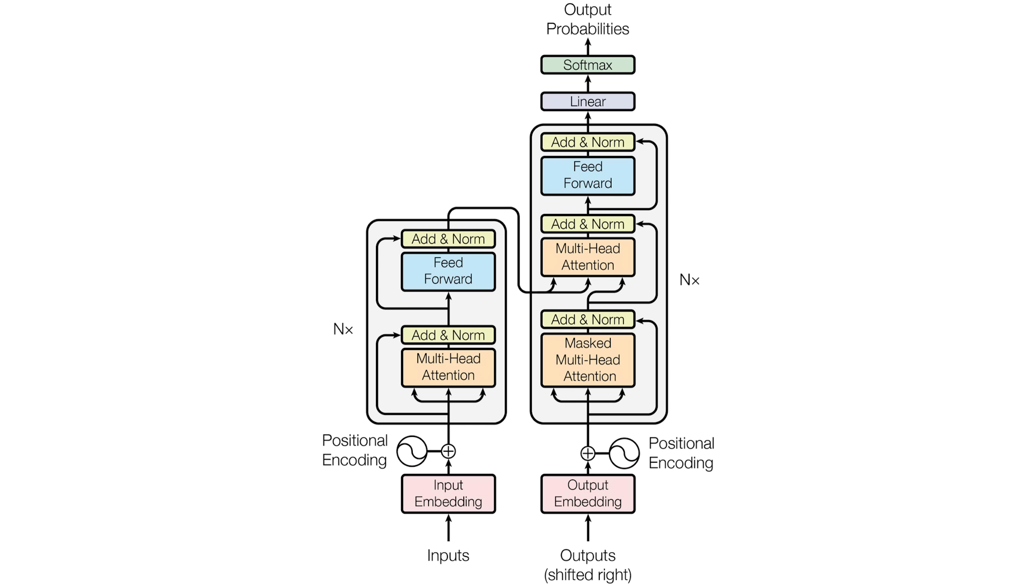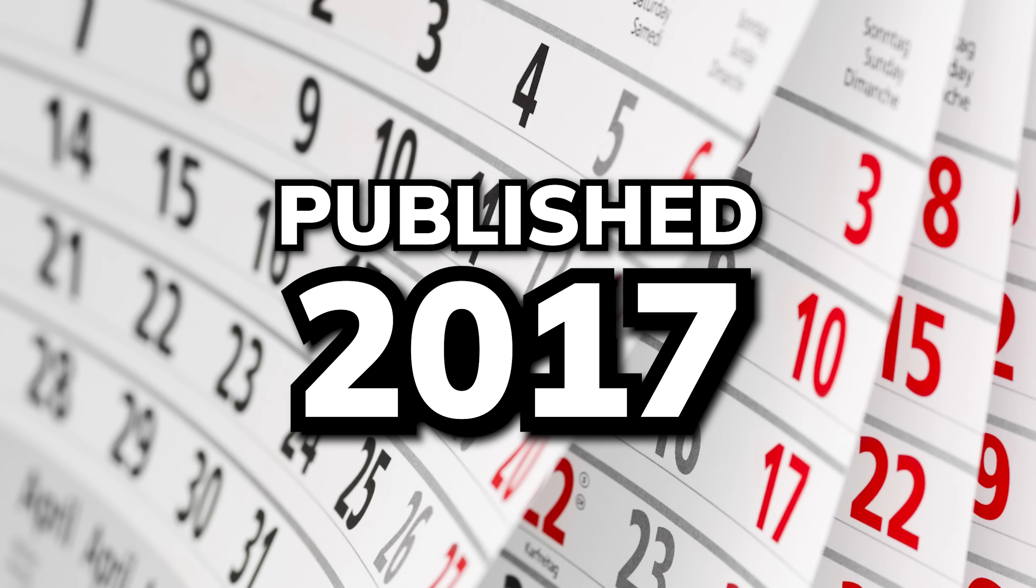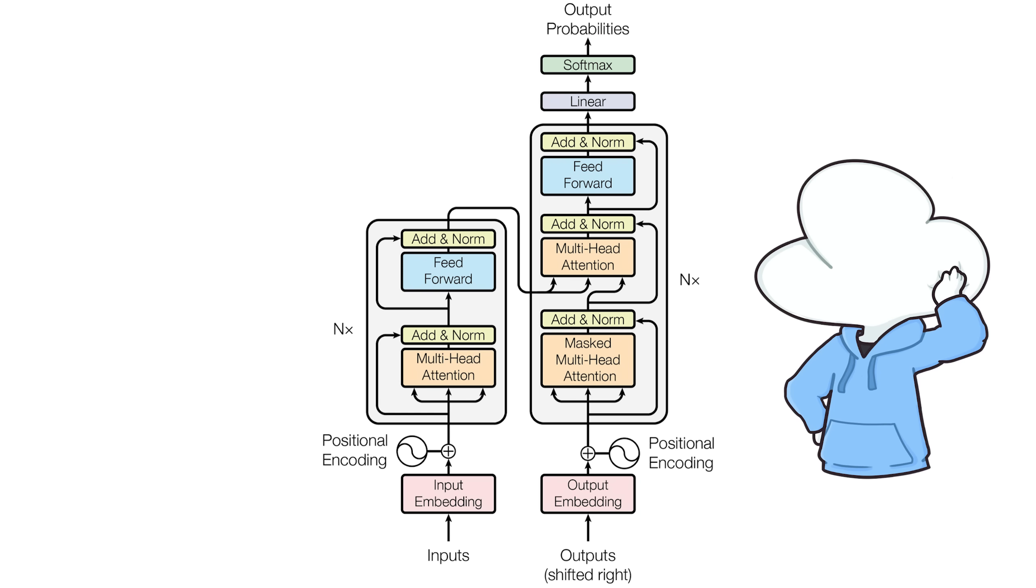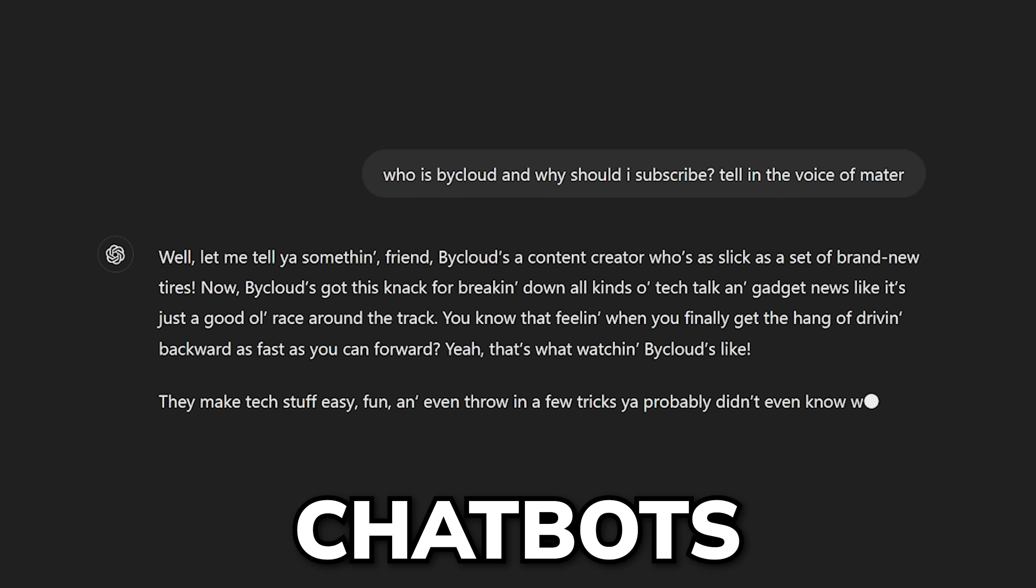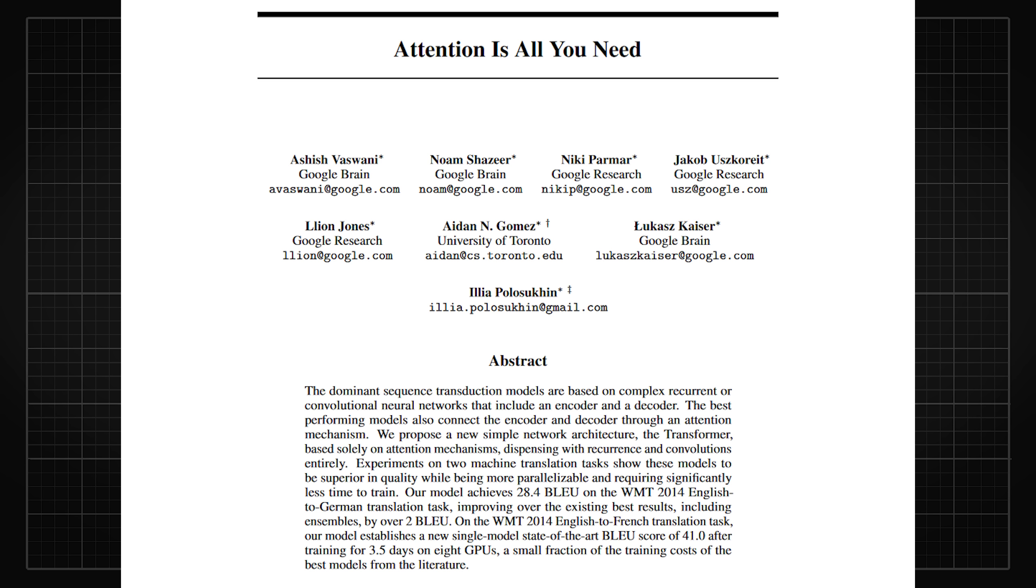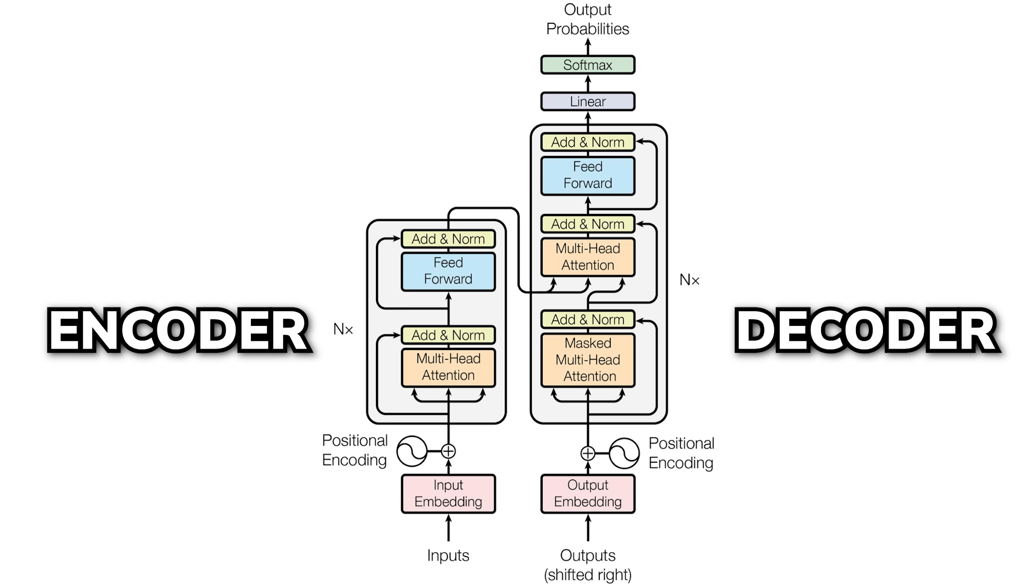This is the Transformer we all know and love, published back in 2017 by Vaswani et al. While it is still technically the state of the art, the Transformer used in AI chatbots nowadays looks slightly different. In the original paper, the model was designed with an encoder-decoder architecture.